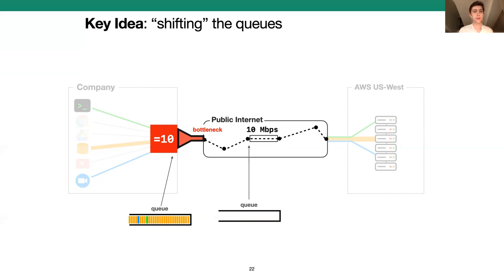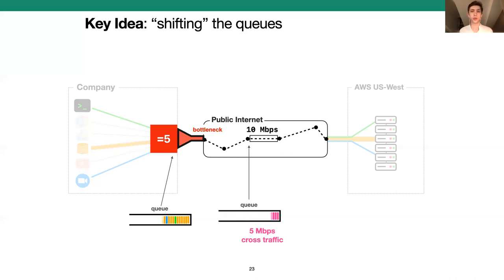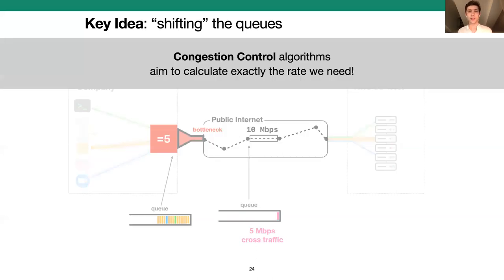Imagine, for example, that there's some other traffic sharing this link that averages about 5 megabits per second. If we keep sending at 10, our packets will go back to queuing in the middle of the network. So in this scenario, we actually need to send at 5 in order to maximize throughput and still build a queue within our own site. How can we possibly know the right rate given all these different possible scenarios? Well, if you tilt your head a little bit, this is actually a very familiar problem. Determining the available bandwidth in the network at any given time is exactly what congestion control aims to do — and this is the key idea behind Bundler.